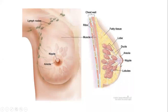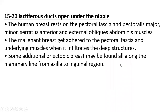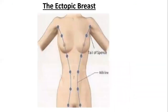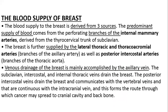Fifteen to twenty lactiferous ducts open under the nipple. Regarding blood supply, the human breast is supplied by three main arteries: the internal mammary artery, the lateral thoracic and thoracoacromial arteries, and the posterior intercostal arteries. Venous drainage is through axillary veins, and also through subclavian, intercostal, and internal thoracic veins.